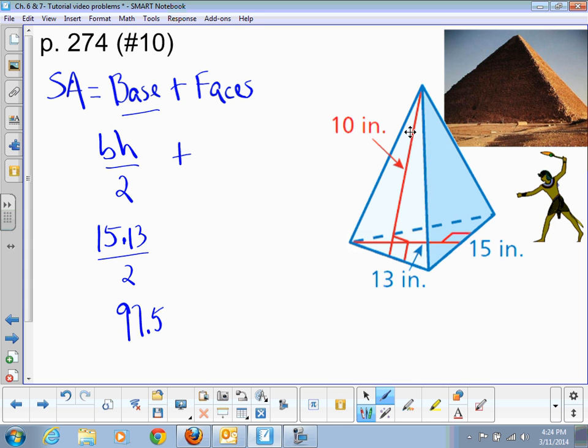So 15 times 13 and then divide by 2, you're going to get 97.5. So that's the area of the base. Plus now we want the area of all the faces. Well, let's just take one. Once again, triangle. How do we do that? Base times height divided by 2. Same concept, but we're going to take that answer and multiply it by 3.